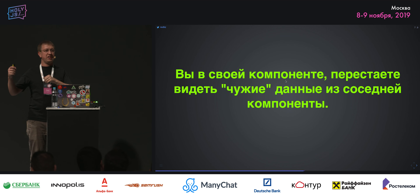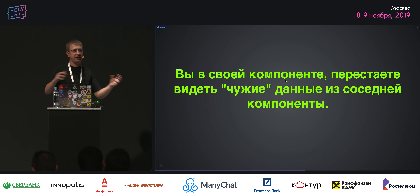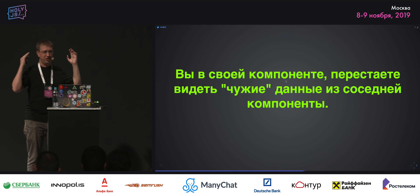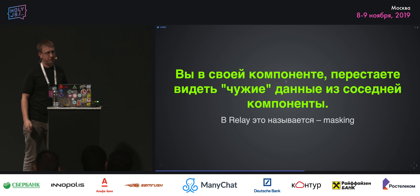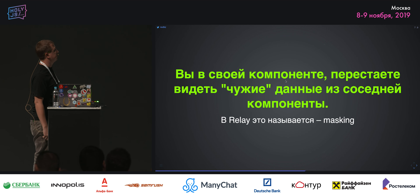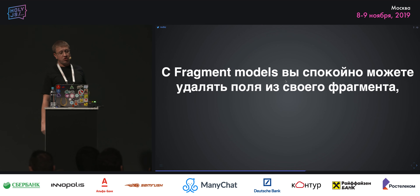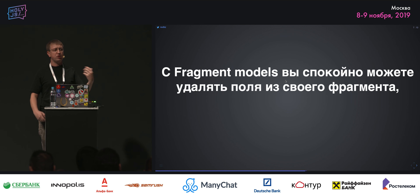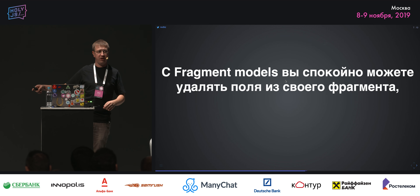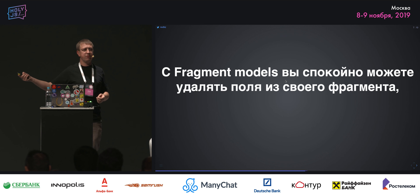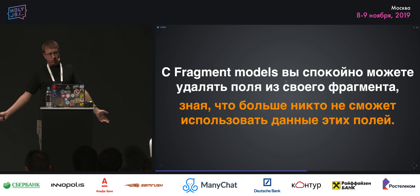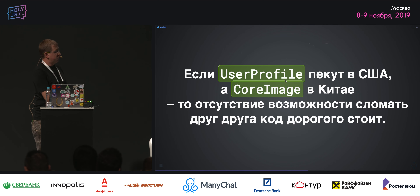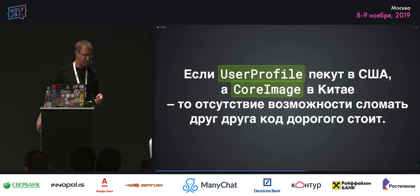Когда поле avatar пробрасывается в компонент core_image, туда пробросится моделька, но create_fragment_container под капотом размаскирует поля, реально присутствующие в этом фрагменте, и для компонента в пропсах положит два поля: size и URL. Core_image будет видеть только ровно свои данные. Вы в своей компоненте перестаёте видеть чужие данные из соседней компоненты — все фрагменты изолированы. Каждый фрагмент для своего компонента, каждый фрагмент для модульности. В Relay это называется masking — маскировкой. Например, user_profile пекут в США, а core_image в Китае — отсутствие возможности сломать код друг друга дорогого стоит.